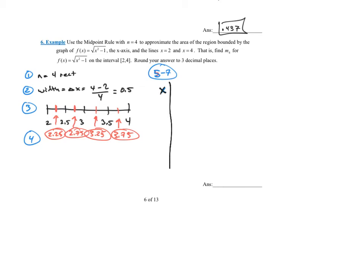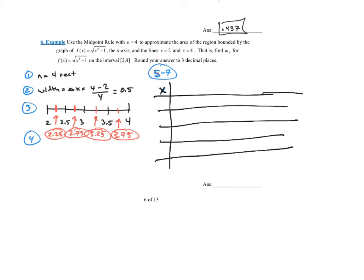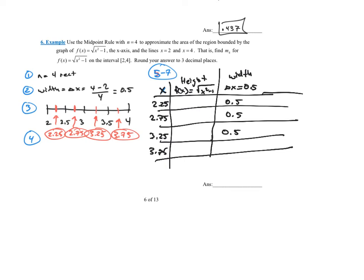For steps 5 through 7, we organize everything in the chart. We have four x-values: 2.25, 2.75, 3.25, and 3.75. To find the height, we plug each into the function — the square root of x squared minus 1. The width is delta x, which is 0.5 for every rectangle. The area is height times width for each rectangle, and then we add them all together to get the total.